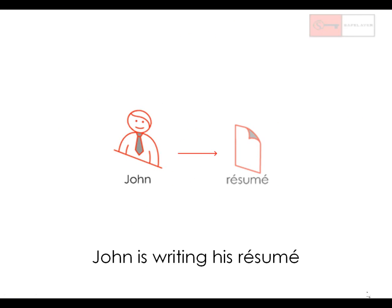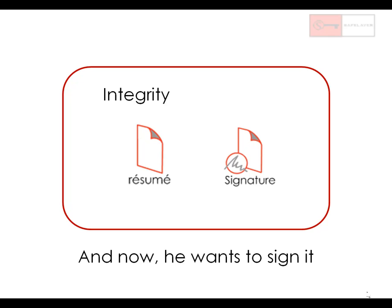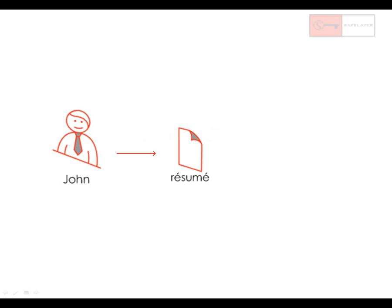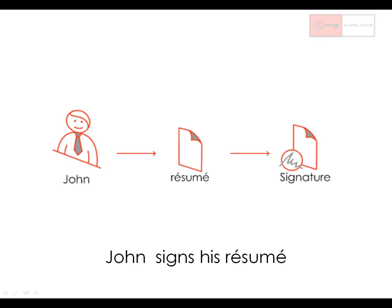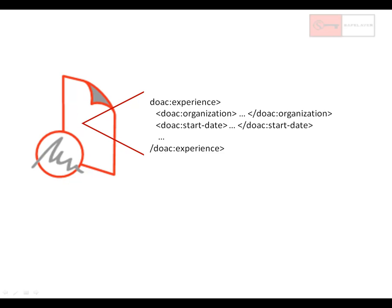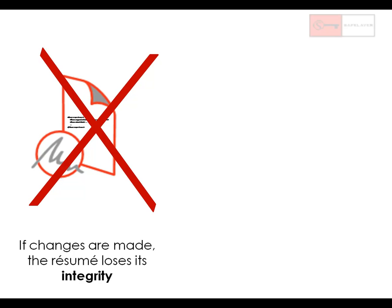Here we have John, who is writing his resume, and now he wants to sign it in order to provide it with some integrity and authenticity. Integrity is the property that allows to check that the document has not been modified after it was signed, and authenticity is the property that allows to verify who the author of the document was. In order to sign his resume, John can use the traditional digital signature, choosing any digital signature application such as SafeLayer OpenSignX or Q1Desktop. However, the traditional digital signature has some limitations. If John updates the document or adds new pieces of information in it, the signature loses all its value and will no longer be valid. For instance, if he wants to add a new professional experience, he will have to sign the whole document again after making any modifications, despite the importance and extent of the modification.